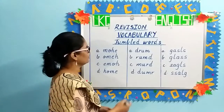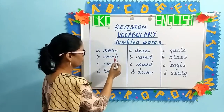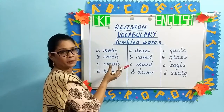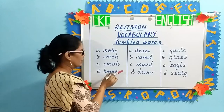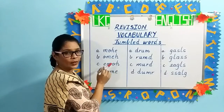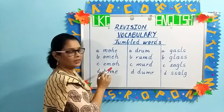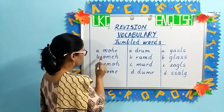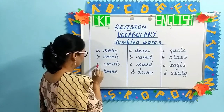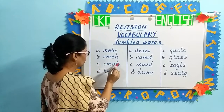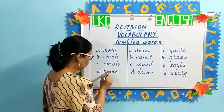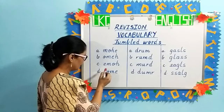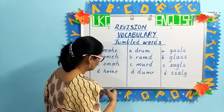Children, the next pattern is jumbled words. Again, you have four options — A, B, C, D. All the alphabets are mixed up. Look at each word carefully and select the right spelling. The first one — option A: M-O-H-E. Option B: O-M-E-H. Option C: E-M-O-H. Option D: H-O-M-E. Which is the correct word, children? Home, option D, H-O-M-E. You will put a tick.